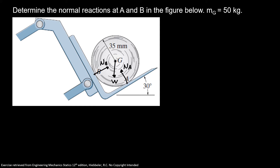Now we can put our angles. We know that the normal is 90 degrees with the plane. We're going to decompose our vector into NAY and NAX. With trigonometry, we know that 30 degrees is up here, so NAY is equal to NA times cosine of 30 degrees, and NAX is equal to NA times sine of 30 degrees.